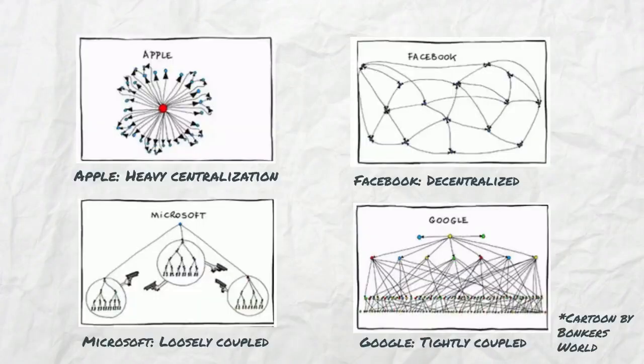About 10 years ago a cartoonist was circulating pictures of the structures of some major tech firms, and you can really see these dimensions at play. Apple shows heavy centralization with all decisions going up to the CEO. Facebook is totally decentralized with no sign of hierarchy whatsoever. Microsoft is so loosely coupled its divisions are at war with each other, and Google is so tightly coupled that everybody's connected to everybody else.